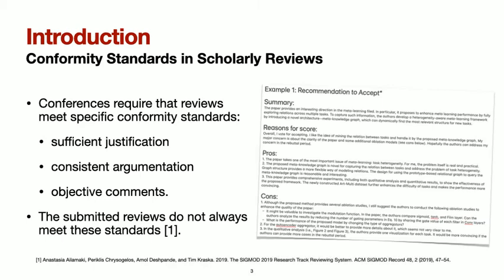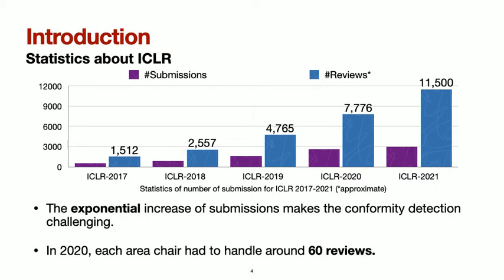However, not all submitted reviews meet these standards. This problem becomes even more challenging due to the exponential increase in the number of submissions for some conferences. To guarantee a minimum number of reviews per submission, the number is around three times the number of submissions. For example, for ICLR 2020, the number of reviews is more than 7,000. Consequently, each area chair has to handle a high number of reviews — around 60 reviews that do not always meet the conformity standards.